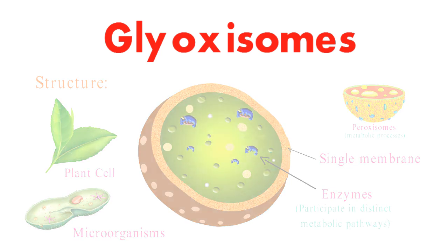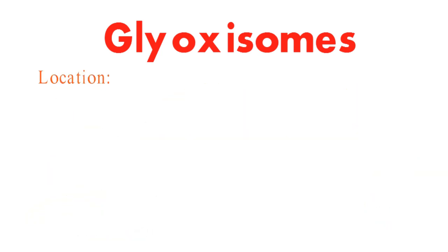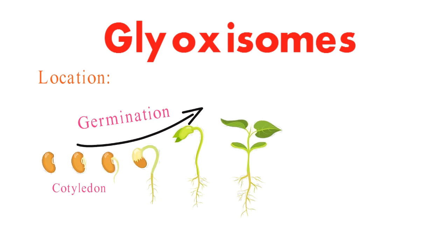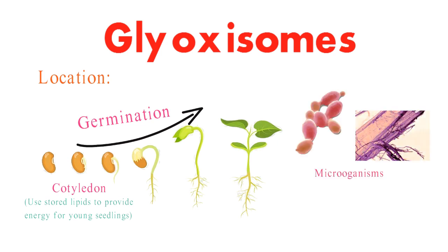Let's talk about where these glyoxosomes are located. In plants, glyoxosomes are most commonly found in tissues like cotyledons, especially during the germination of seeds. These cotyledons use stored lipids to provide energy for young seedlings until they can start photosynthesis. Microorganisms like certain yeasts and filamentous fungi also have glyoxosomes, and these are crucial when these microorganisms grow on fatty acids as their main energy source.